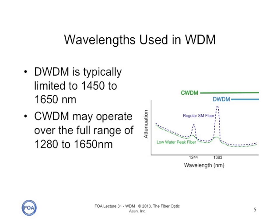Each system has its own wavelength range. DWDM uses tightly spaced wavelengths in the range of roughly 1450 to 1650 nanometers — the range where fiber amplifiers can typically be used on long distance systems to amplify the signal for repeaters. Coarse wavelength division multiplexing uses broader spaced wavelengths over the full range of 1280 to 1650 nanometers, the full range of single mode fiber, but it needs low water peak fiber so the high attenuation in the water peaks doesn't attenuate the signals at critical wavelengths.